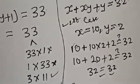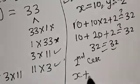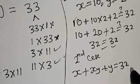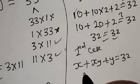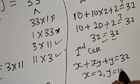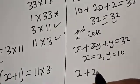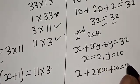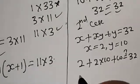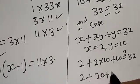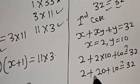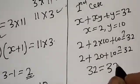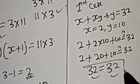Now let's check the second case. Given equation: x plus xy plus y equals 32. Here x equals 2 and y equals 10. We have 2 plus 2 times 10 plus 10, which is 2 plus 20 plus 10. That equals 32. The left-hand side equals the right-hand side, which satisfies the given equation.